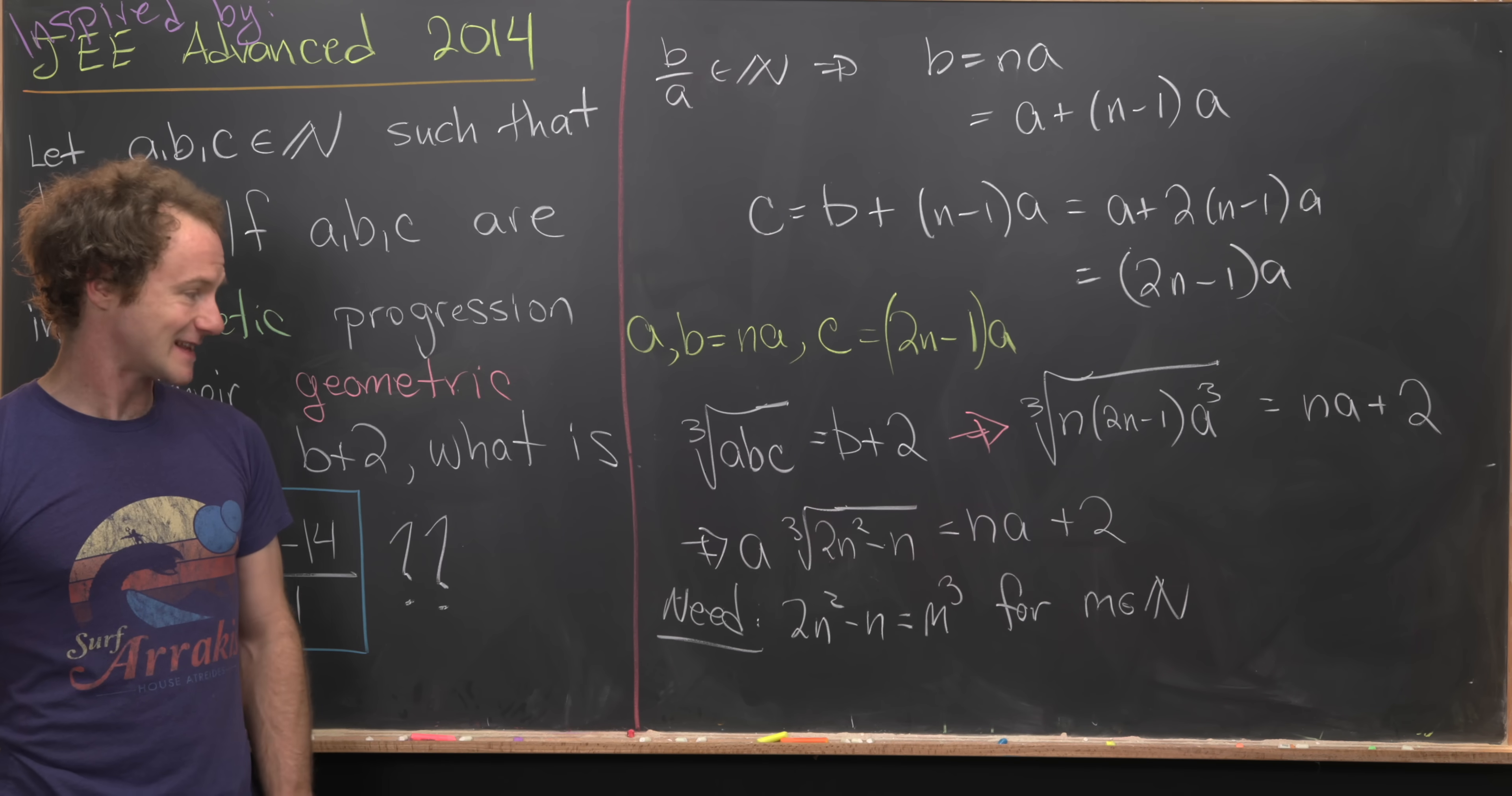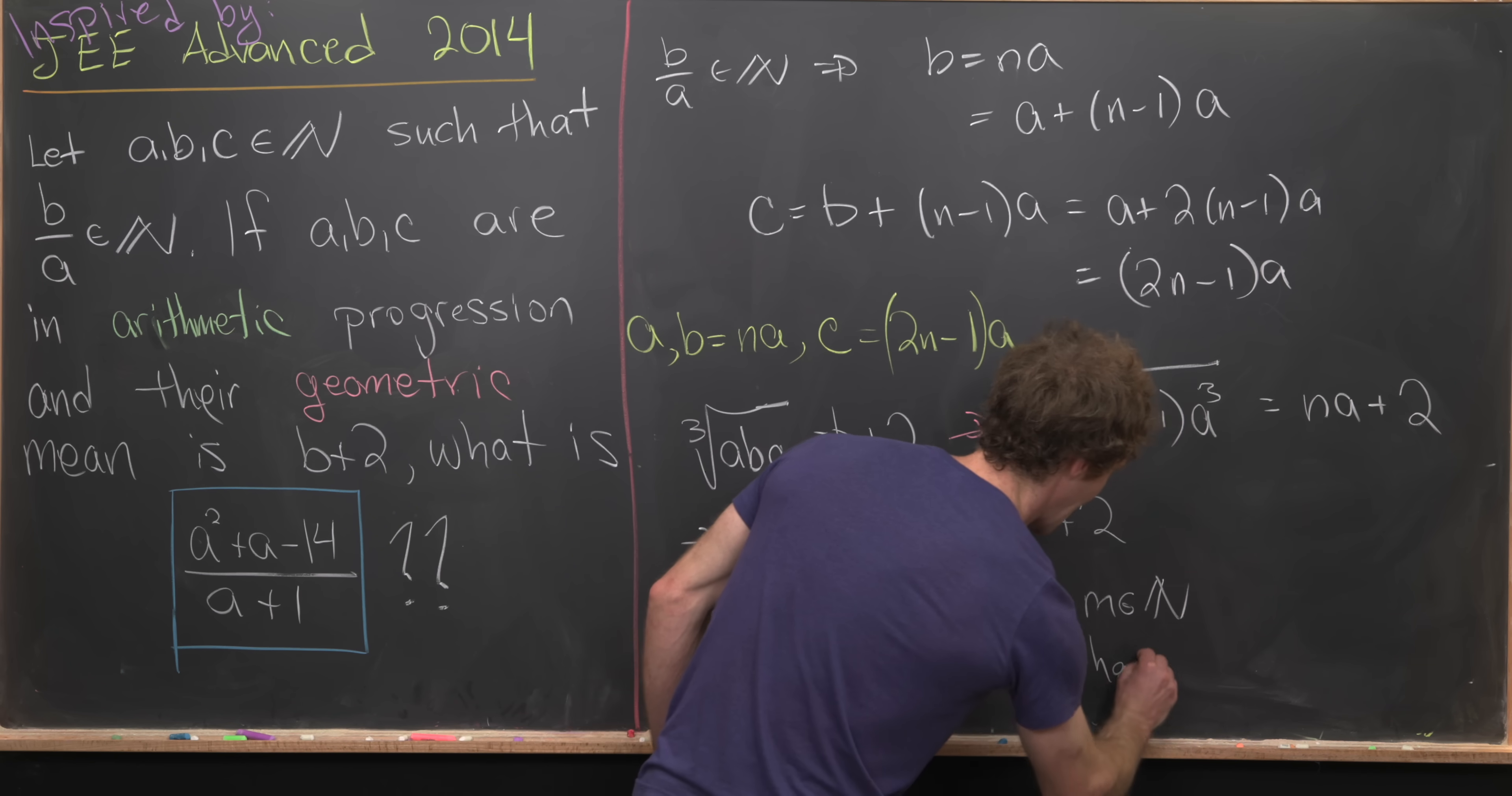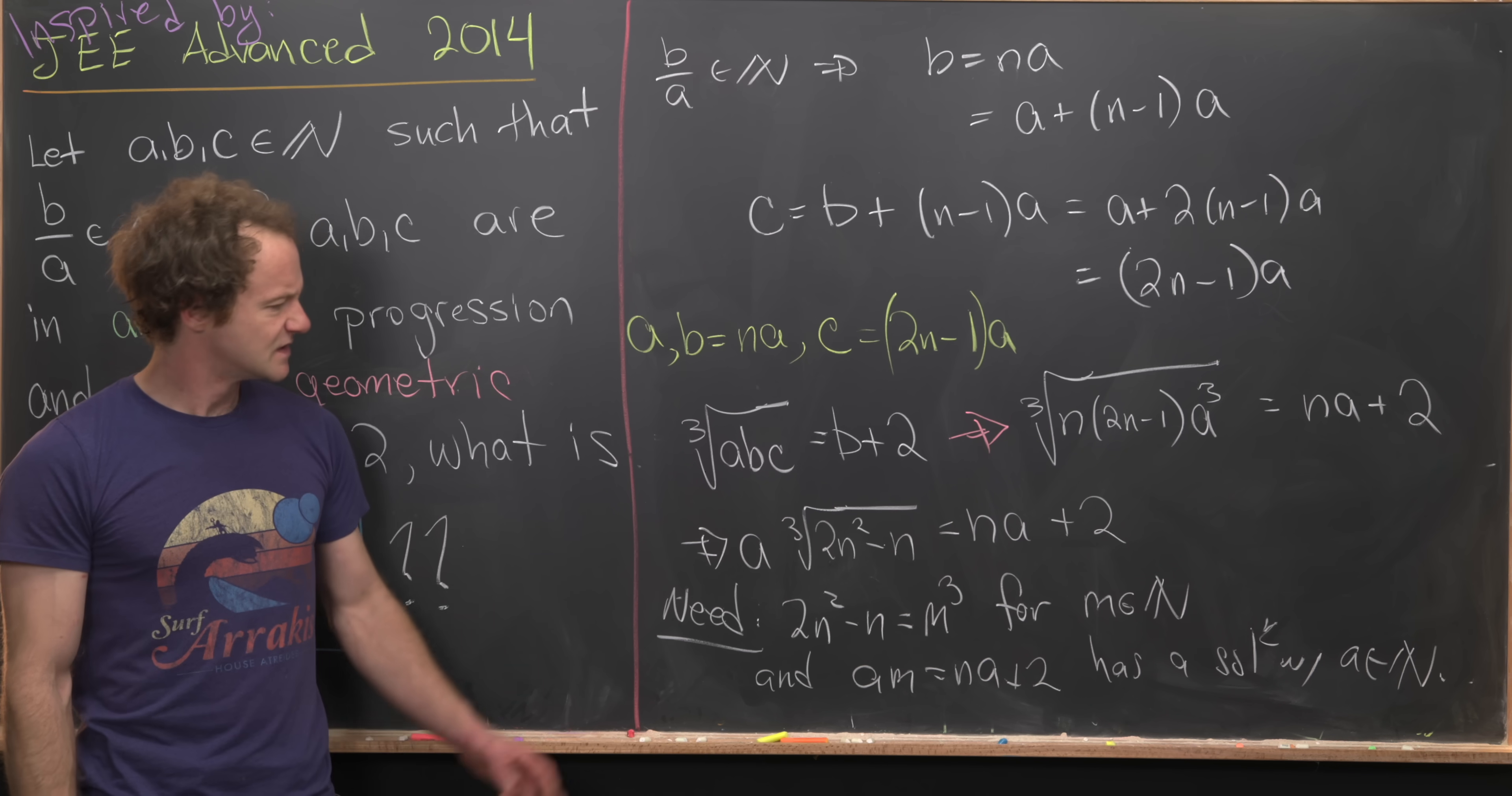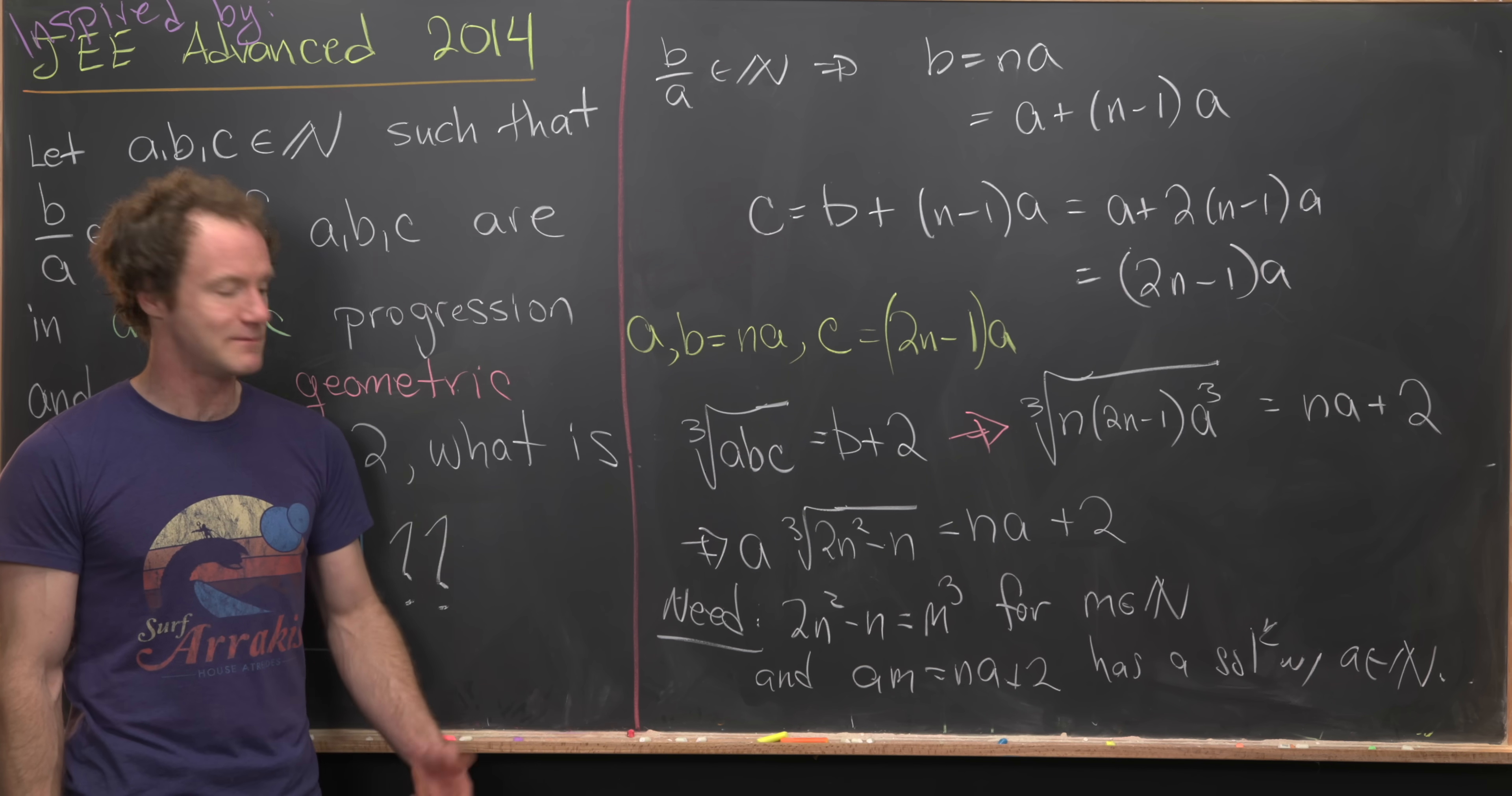And then after we have that set up, we have to pick the natural number M so that A times M equals N times A plus 2 has a solution with A, which is a natural number, which was one of our original assumptions. So this is a little bit more than I want to get into right here, but maybe hash it out in the comments. And if it seems like this problem is doable or sufficiently interesting, I'll go ahead and make a follow-up video.